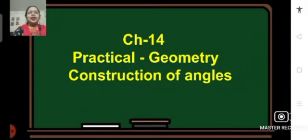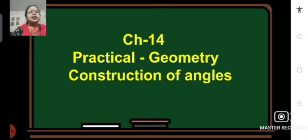Good morning students, Sairam. In today's mathematics session we are going to learn construction of some important angles by using compasses and ruler, which is part of chapter 14 practical geometry. You have to do these constructions as your assignment on white sheet of paper using compass, ruler and sharpened pencils. I am first going to discuss the various steps involved and then show you a video on how to do these constructions.